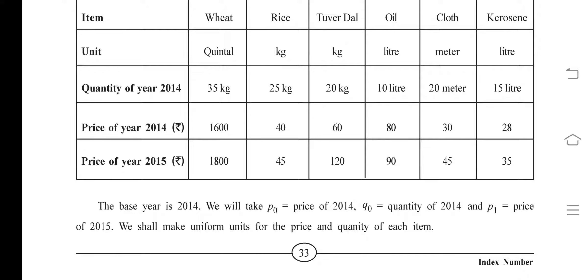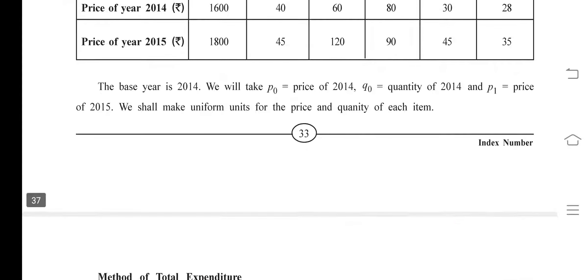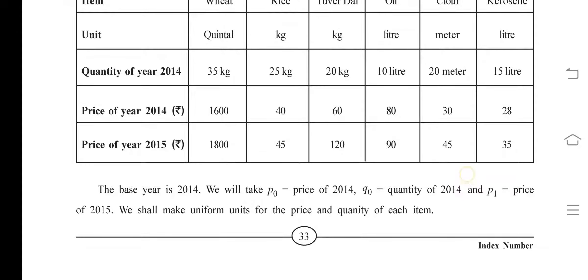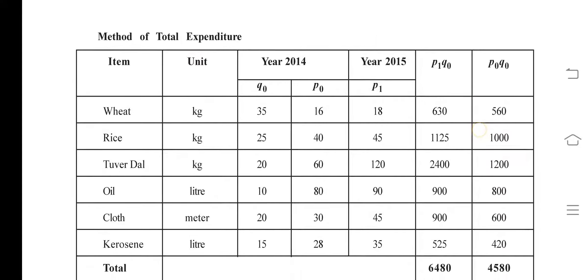Now pay attention: the price for 2015 is P1. One quintal is equal to 100 kg, so you have to pay attention to that. Check the units — kg, kg, kg, liter, liter, meter, liter. The quintal part needs to be converted: divide the price by 100 to convert from quintal to kg. So 1600 divided by 100 equals 16.